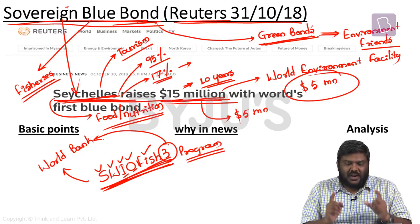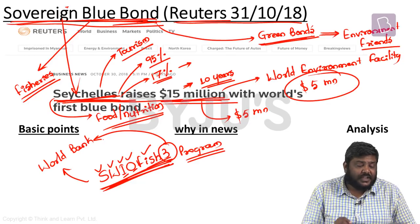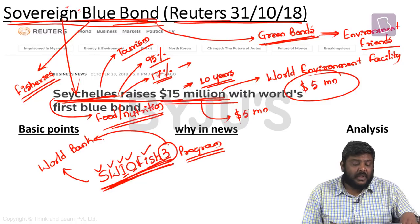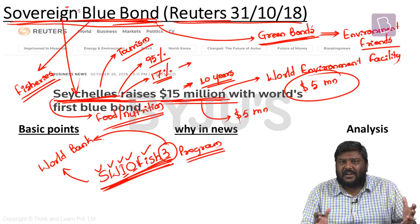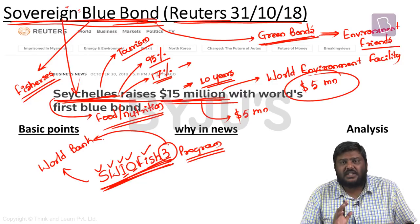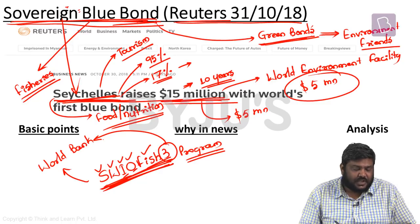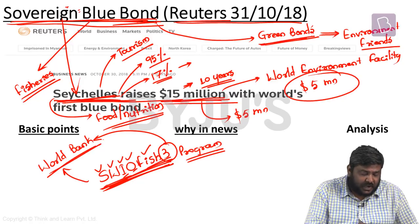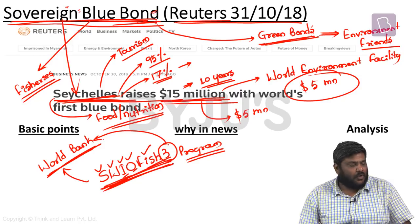Apart from the 15 million dollars raised through blue bonds, the World Bank has also provided a credit guarantee of 5 million dollars, and the World Environment Facility has pledged 5 million dollars for this project. In summary, Seychelles has become the first country to issue a sovereign blue bond; the 15 million raised will be used to protect and manage the marine ecosystem, as part of the World Bank's third project in the Southwest Indian Ocean to promote marine ecosystems.